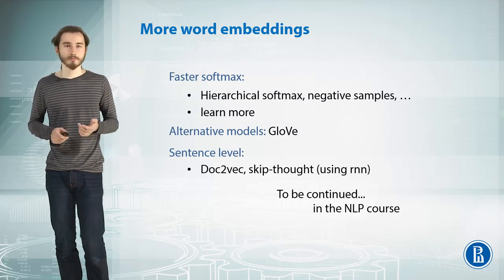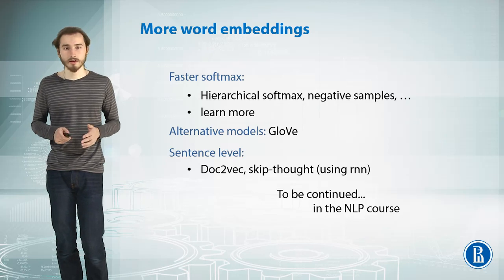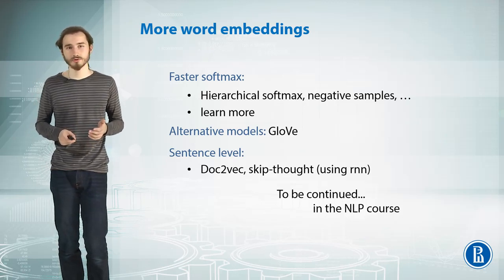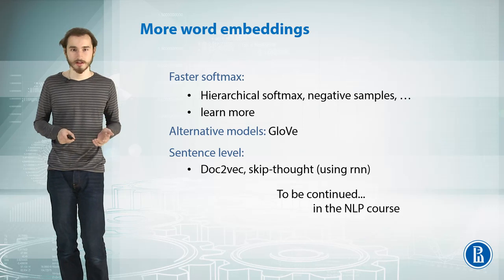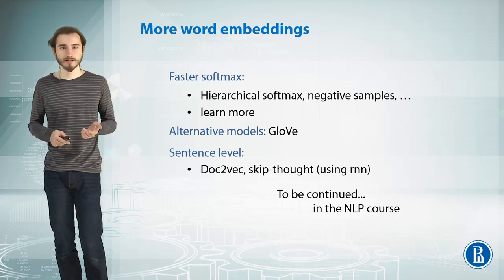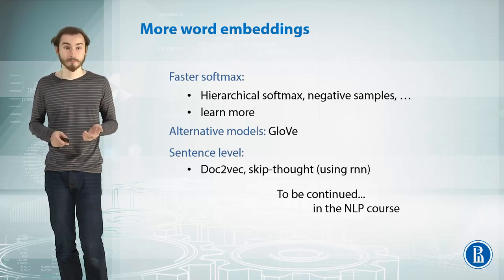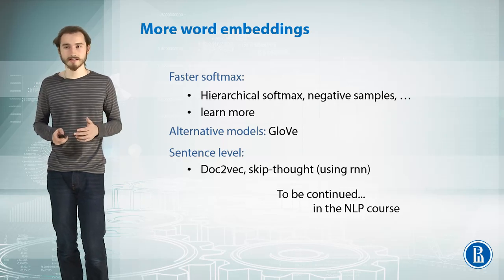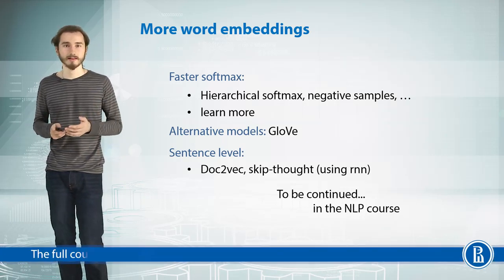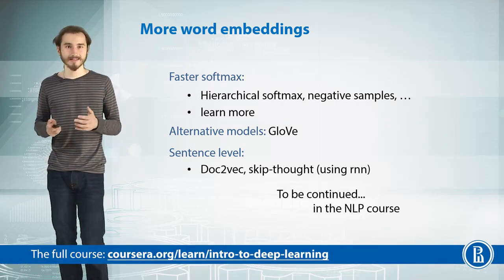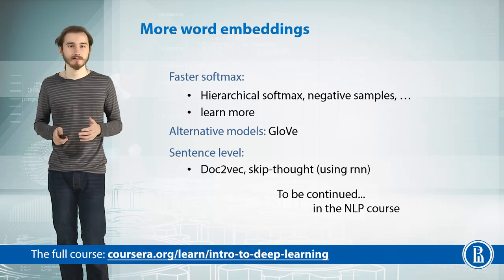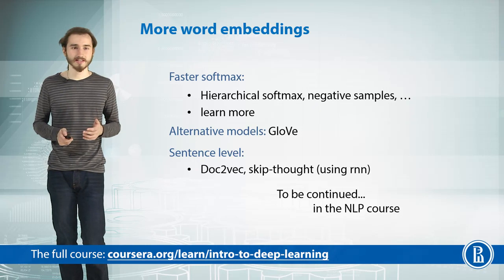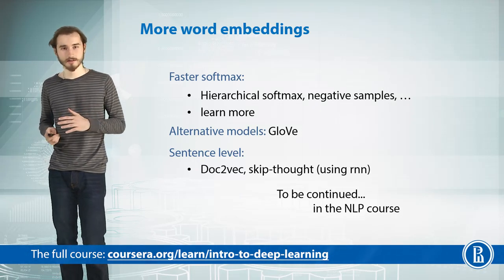Aside from the bonus materials promised in the reading section, we'll also have the entire next week dedicated to advanced applications for natural language processing. We'll study recurrent neural networks that, when paired with word embeddings, can solve not only text classification like sentiment analysis, but also the inverse problem - generating text given a particular task. This coincides very well with the course project, which is generating text captions given images.